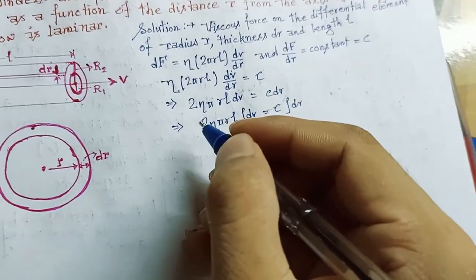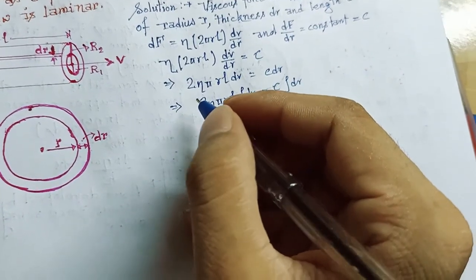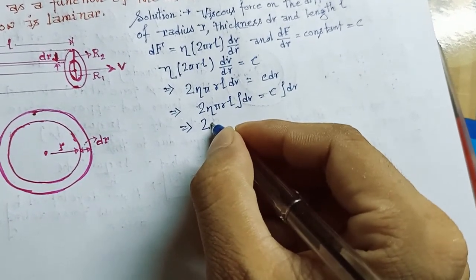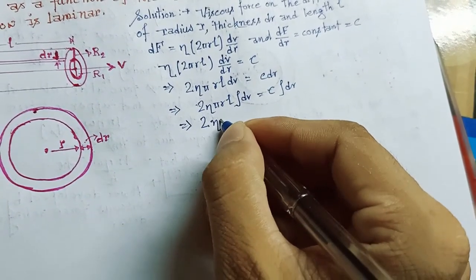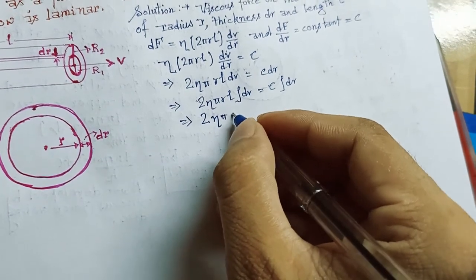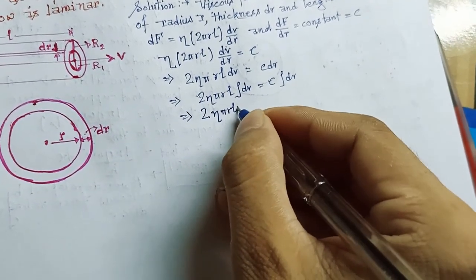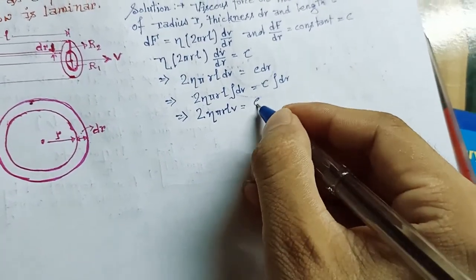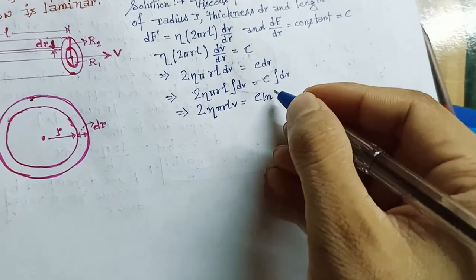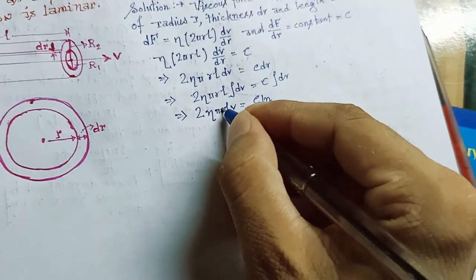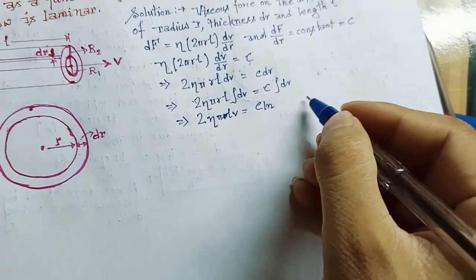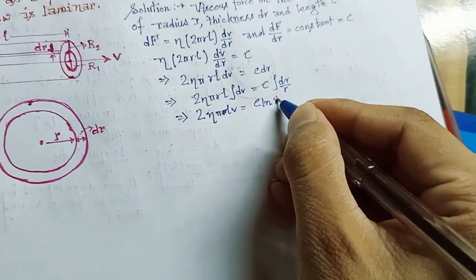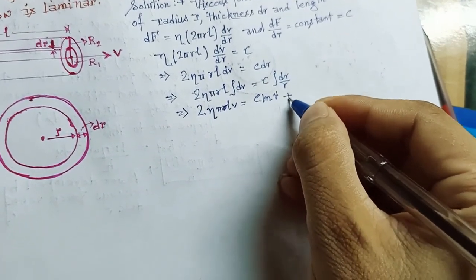Now if we calculate this integral, then it will become 2 eta pi l v will be equal to C ln r plus C1. From this equation...